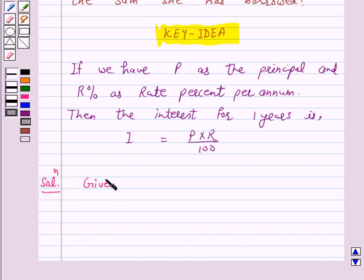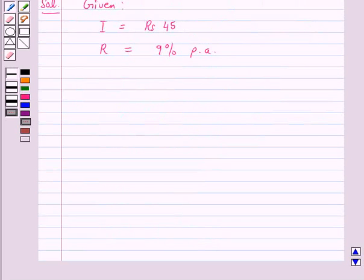Nina gives an interest of Rs. 45. That is, interest equals Rs. 45 for one year at 9% rate per annum. That is, rate equals 9% per annum.